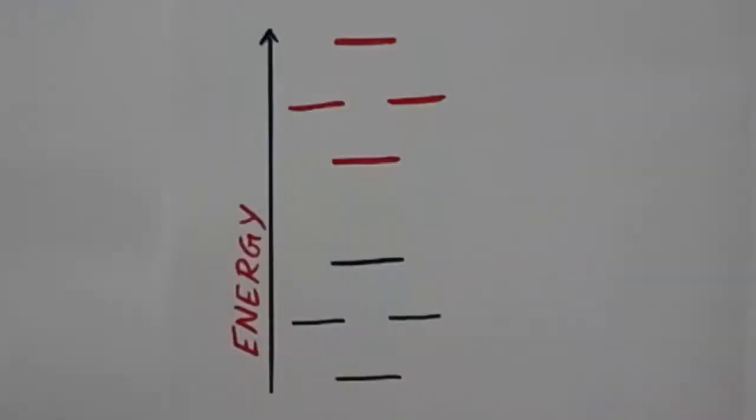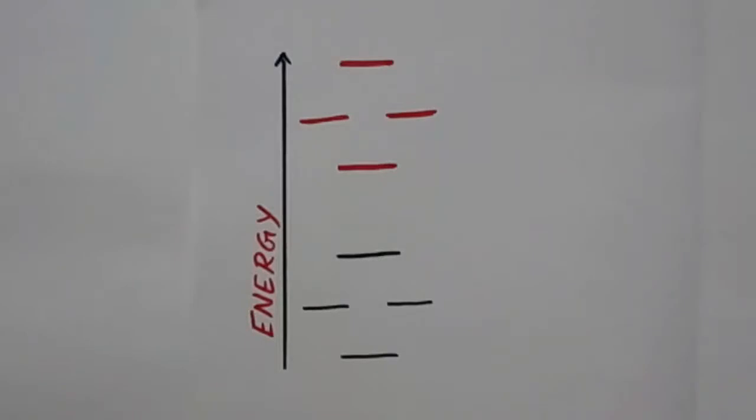We need the following molecular orbital diagram. These are bonding orbitals. These are anti-bonding orbitals.